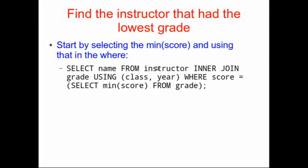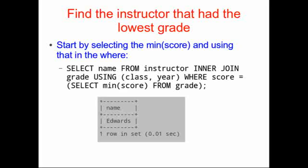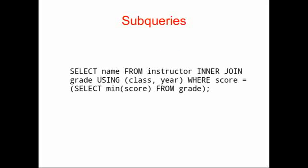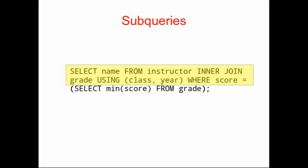We can directly apply that subquery to the select statement we have already seen. Our result is the same — we get the name of the professor that provided the lowest score — but we combine two queries: one to find the lowest score and one to combine that with the name of the professors. We start by selecting the minimum score from grade, which returns 3.2. We put that select statement in parentheses and provide it as an argument to our outer select statement, where we're selecting name from instructor with an inner join.